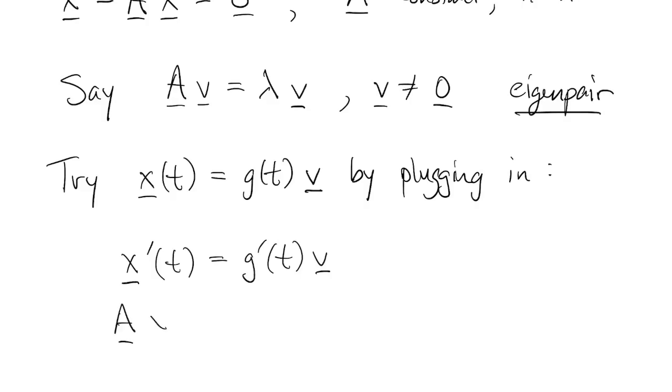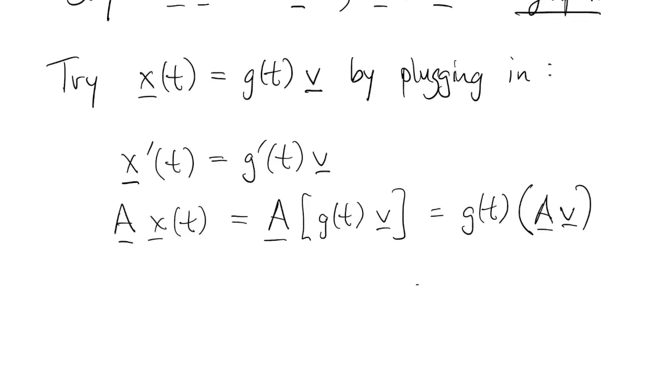A times x, we put in what x is. And then g is a scalar. So it's allowed to move around through the multiplications. But av, by definition, is lambda v. We chose it to be an eigenvector.